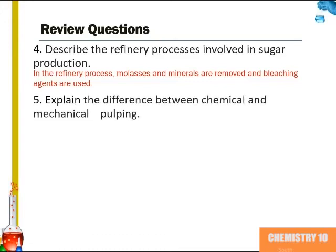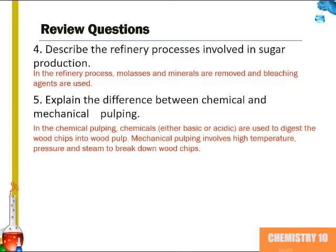Question 5: Explain the difference between chemical and mechanical pulping. In chemical pulping, chemicals — either basic or acidic — are used to digest wood chips into wood pulp. Mechanical pulping involves high temperature, pressure, and steam to break down the wood chips.